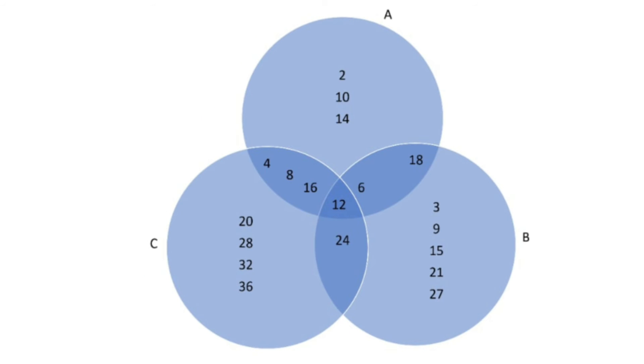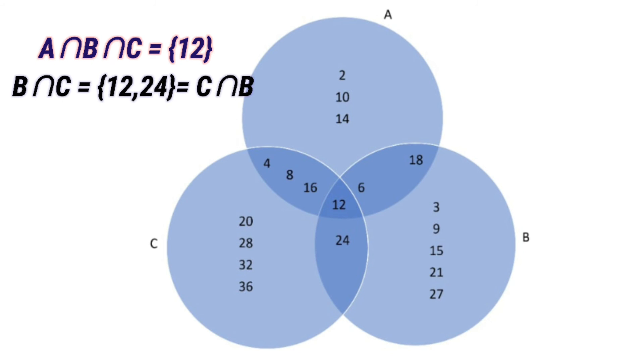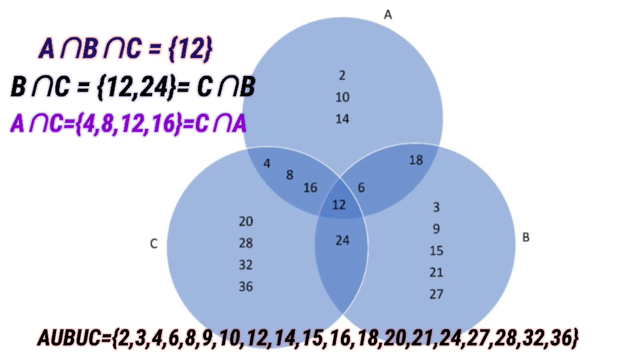Now, observe the Venn diagram. From the Venn diagram, A intersection B intersection C equals 12. B intersection C equals 12 and 24. That means n of B intersection C equals 2 elements. And A intersection C equals 4, 8, 12, 16. That means n of A intersection C equals 4 elements.